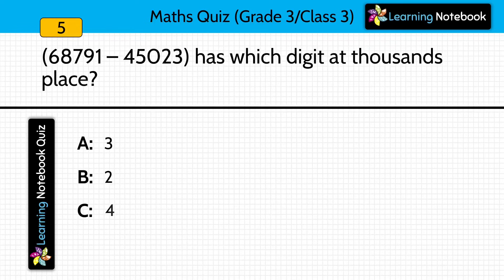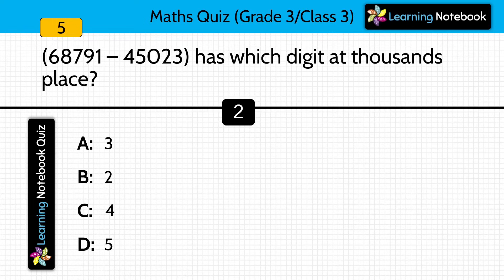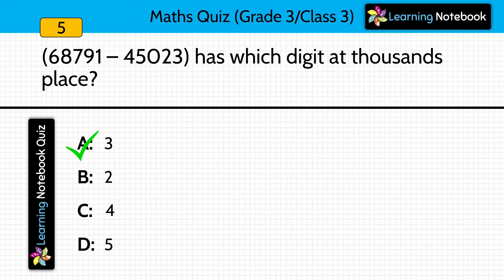Question five: 68,791 minus 45,023 — which digit is at the thousands place in the answer? Solve this subtraction and identify the digit at thousands place. Answer is 3. If you solve these two numbers you get 23,768, and the digit at thousands place is 3.